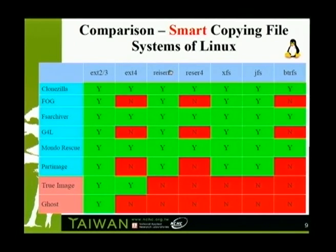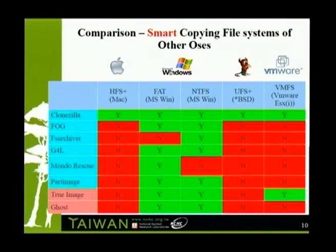The first comparison is about general information. By this slide, we can see that the proprietary software can provide live-copy and differential backup, but not all open source software can. Then we talk about file system support in different kinds of systems. In Linux, some free software toolkits can provide full support. But the proprietary software only provides ext2, 3, or even 4. For other operating systems, FAT and NTFS can be well supported by most Linux tools. Besides, Clonezilla can support HFS Plus on Mac and UFS on BSD series, and VMFS is also supported in VMware vSphere.